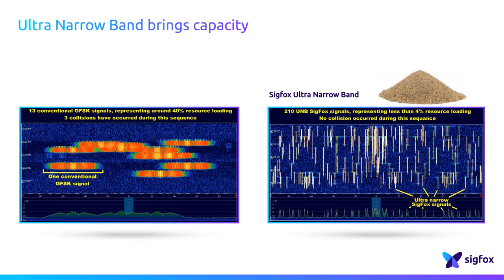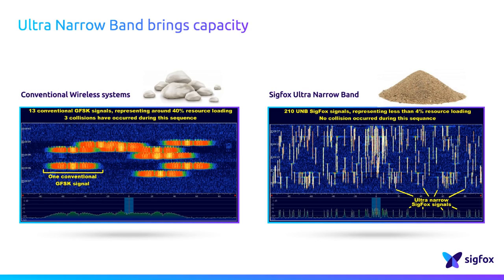Let's compare this ultra-narrow band technology used by SICKFOX to conventional wireless systems. This is the spectrum analysis performed during a test in which 13 conventional GFSK signals were transmitted. The frequency on the x-axis covers the 200 kHz of operation band. Vertically, the reception is shown over a period of a few seconds. These signals cover 40% of the bandwidth, measured by taking into account time and frequency.